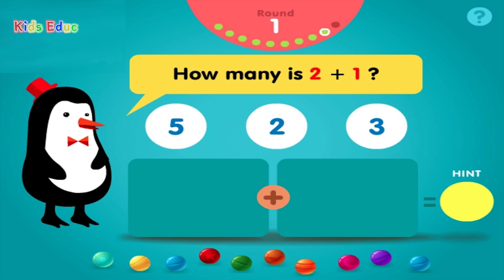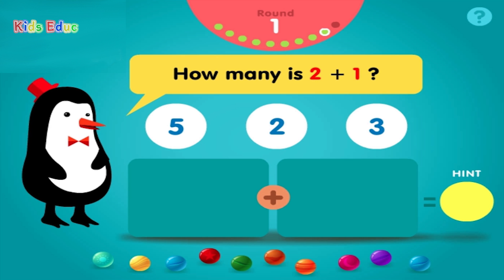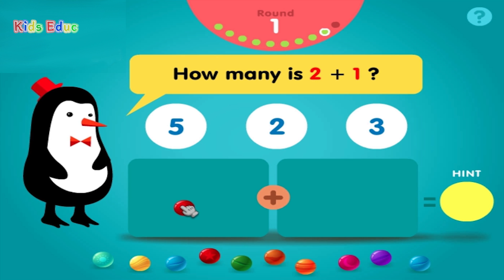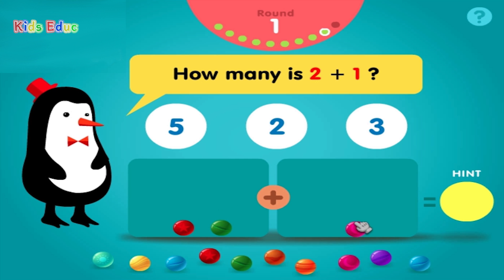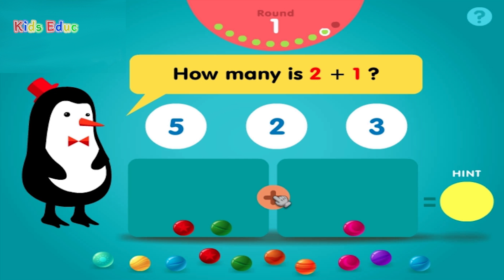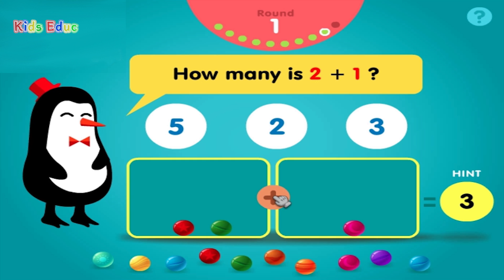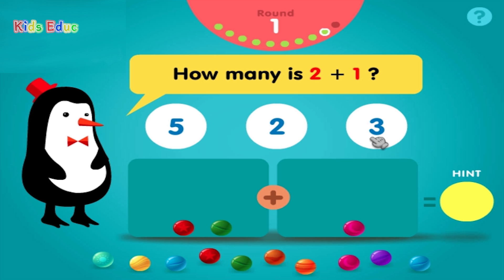How many is 2 plus 1? 1, 2, plus 1, equals 3. Awesome!